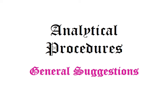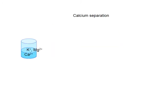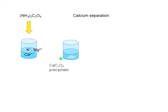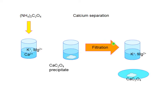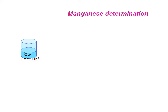Let's look at what analytical procedures can give us proper results. I want to separate calcium ions from a mixture of potassium and magnesium ions in water. One possible procedure is the addition of ammonium oxalate, which results in the formation of a calcium oxalate precipitate — a white powder on the bottom of the beaker. This powder can be filtered out, leaving potassium and magnesium ions in solution.